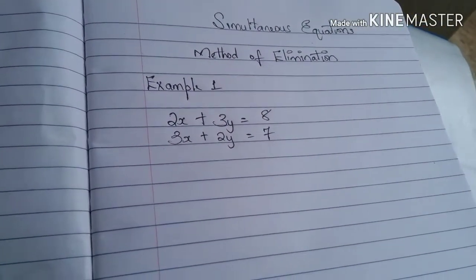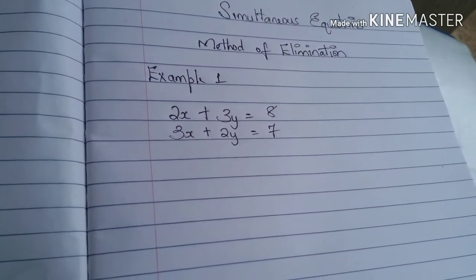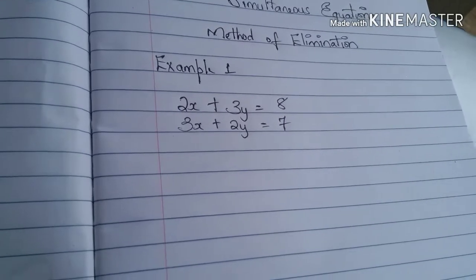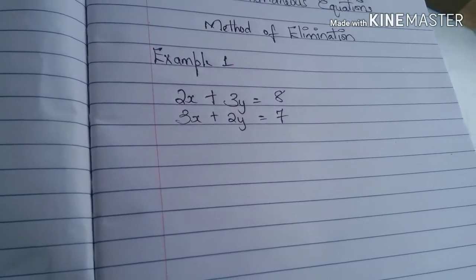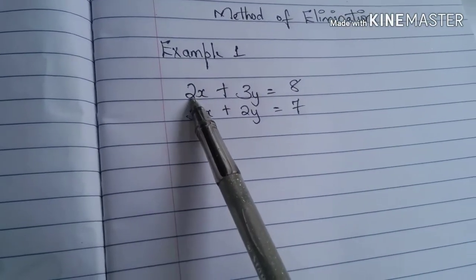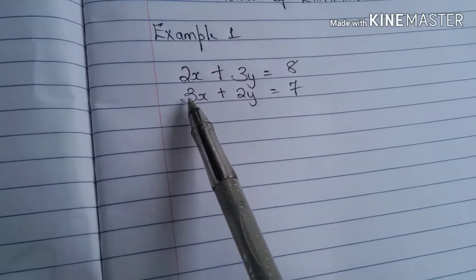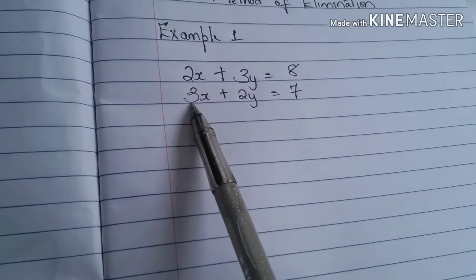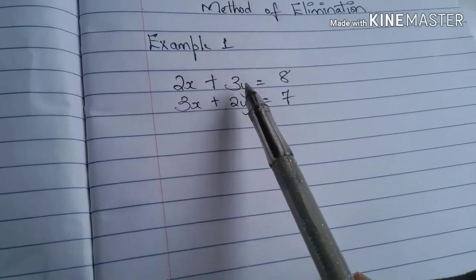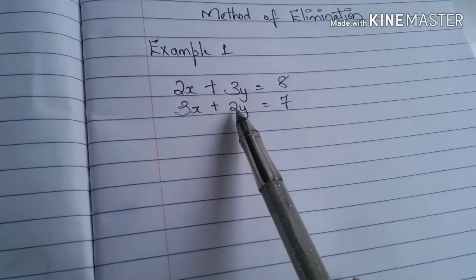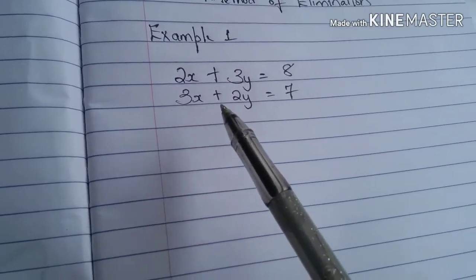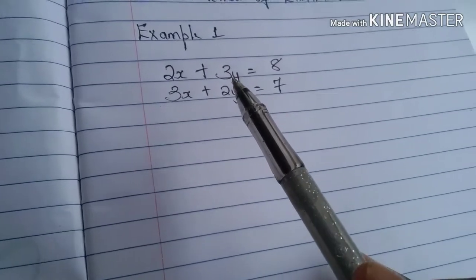So for us to eliminate one variable, the coefficient for that variable must be the same. Looking at it, the coefficient for x in this equation is 2 and the coefficient for x in this equation is 3. They are not the same. The coefficient for y in this equation is 3 and the coefficient for y in the other equation is 2. They are not the same, right? So we have to do something to get them the same.